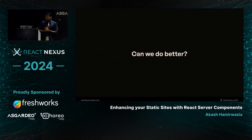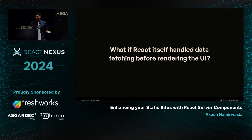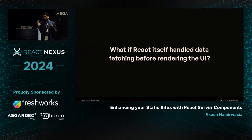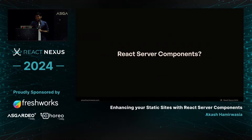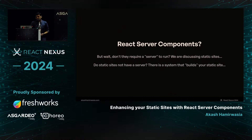The static site community has been building toward this for years. Frameworks don't have the context of what your components are or what the props are. What if React itself handled data fetching before rendering the UI? After all, React knows what the components are, what the props are, and which component shows when. So if it handles data fetching, it should solve our problem. Can we use React server components? But wait — if it's React server components, how can I use it in a static site? I'd need a server. After all, it's in the name.